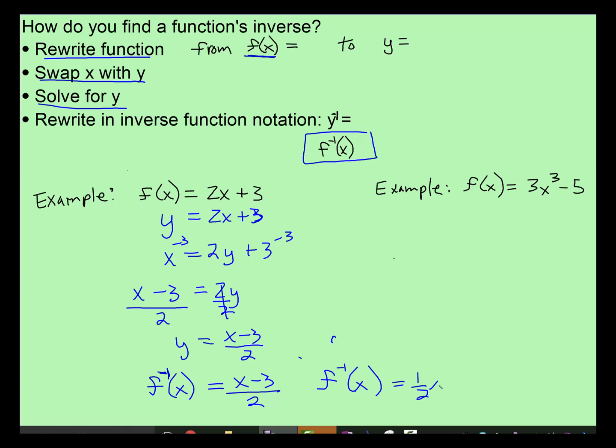1 half x minus 3 halves. This one is easier to graph because you automatically know you're going to start at negative 3 halves, which is negative 1 and a half, and you're going to go up 1 over 2. So those are the steps.